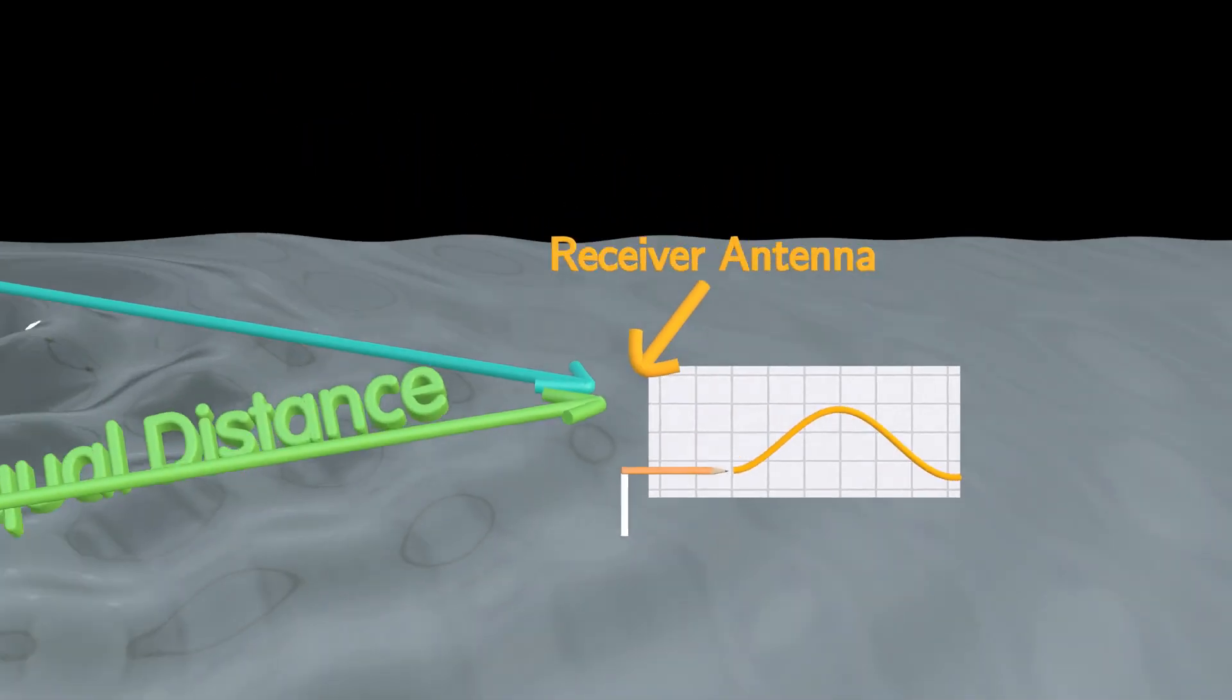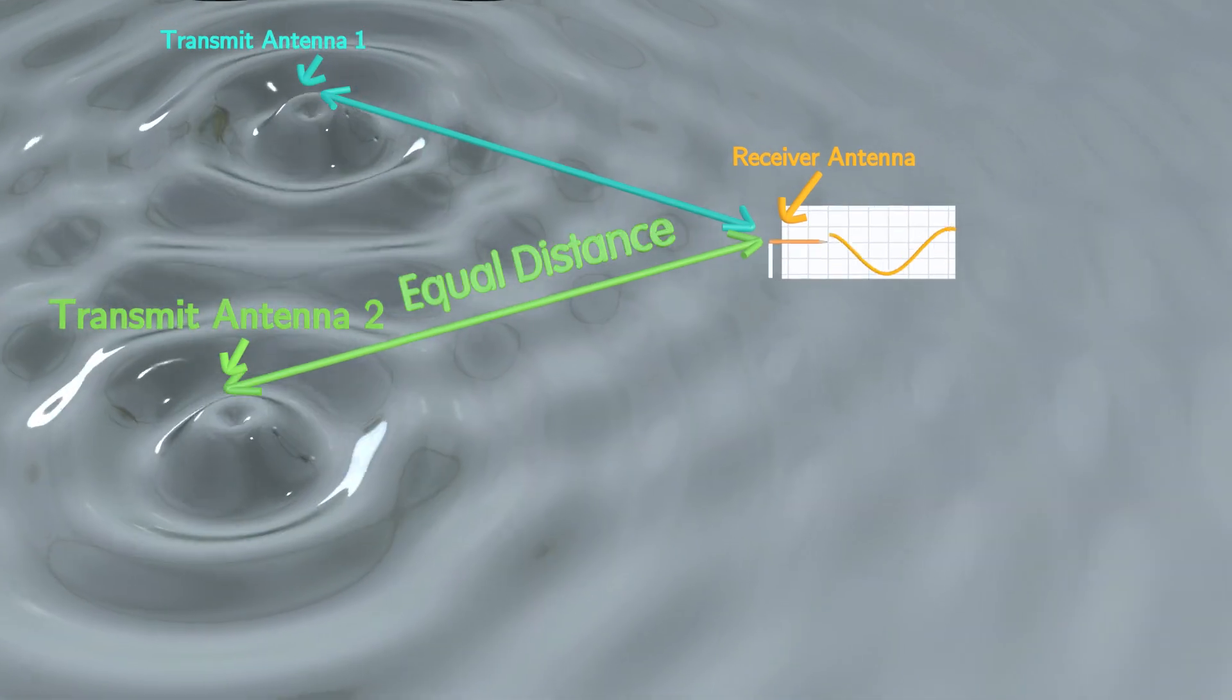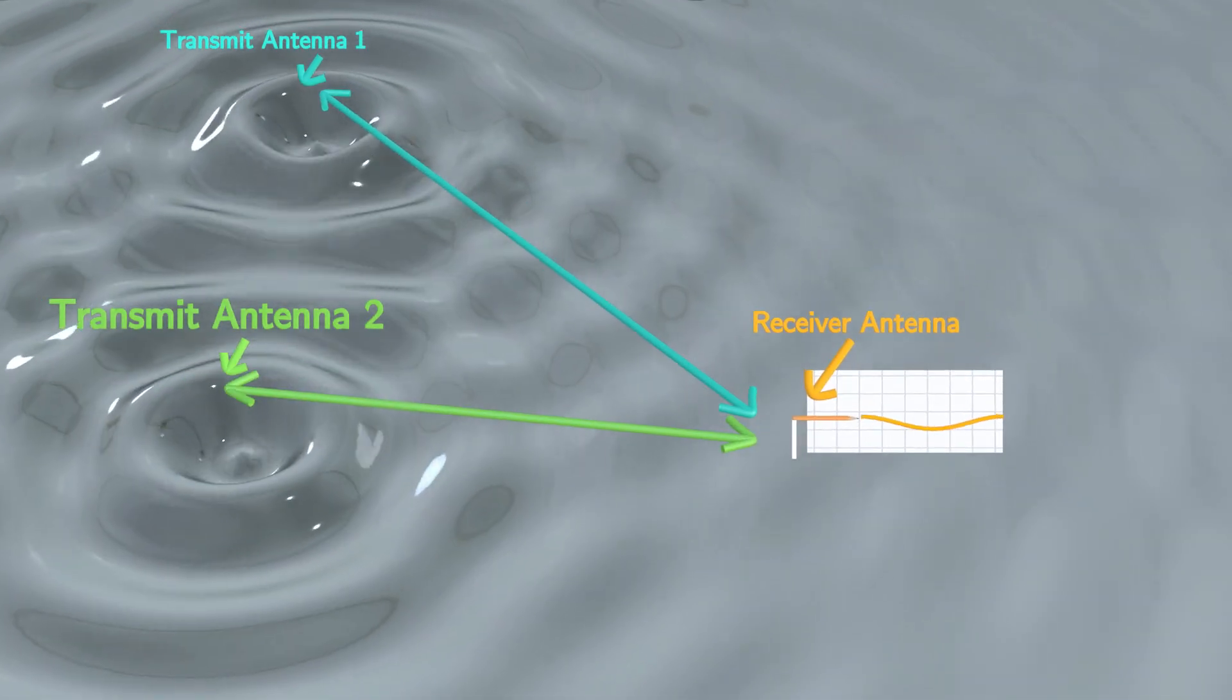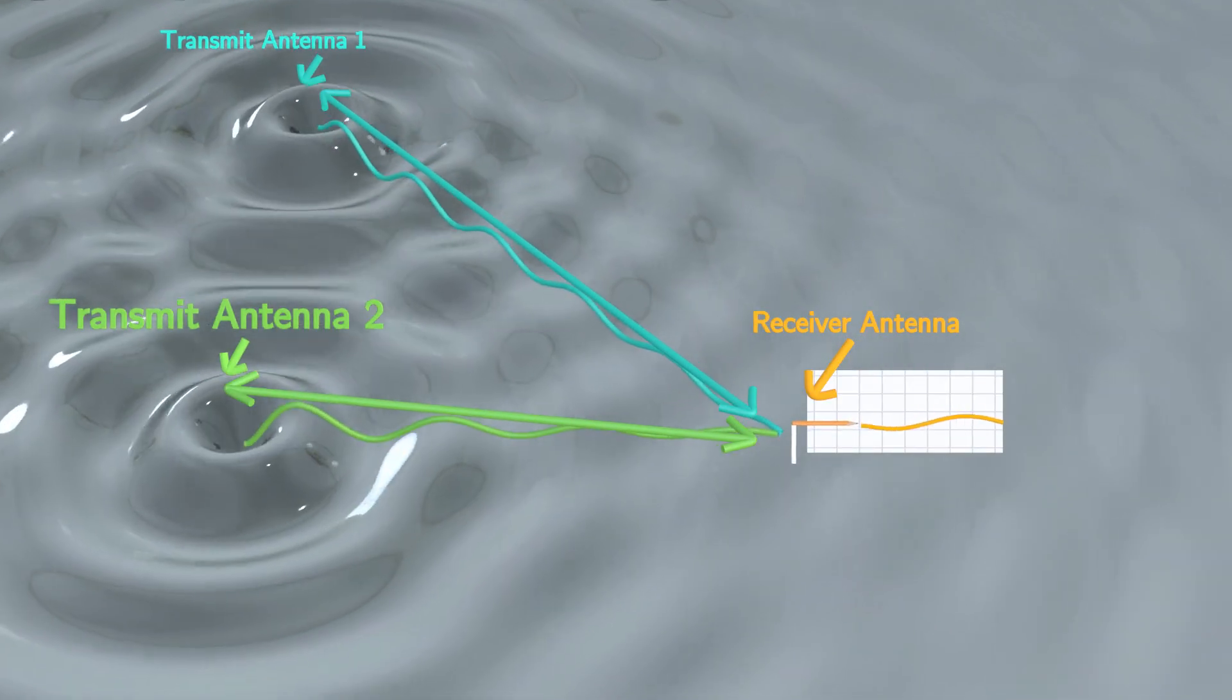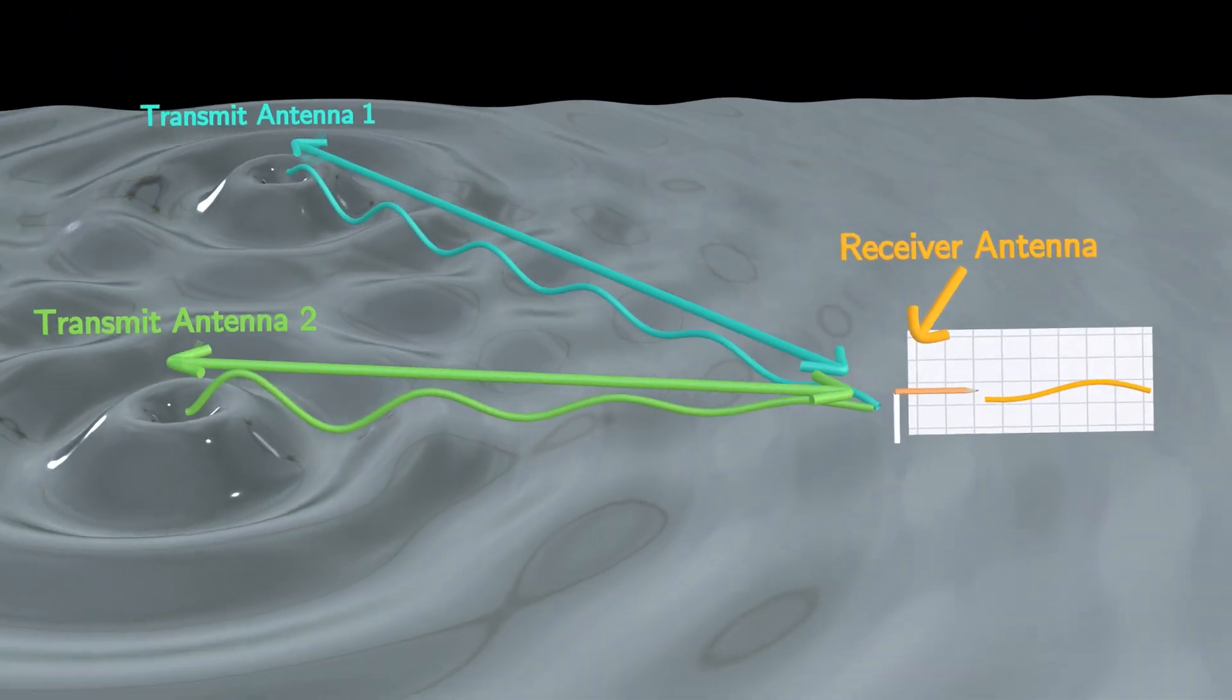But what happens if the receiver antenna is not equidistant from all transmit antennas? In such cases, signals may combine destructively, weakening or completely canceling each other out.